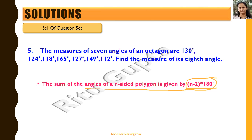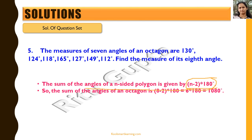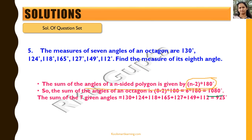Using this formula for an octagon where n = 8, the sum of all interior angles is (8 − 2) × 180 = 1080 degrees. The sum of the seven given angles is 925 degrees. Subtracting 925 from 1080, we get the eighth angle as 155 degrees.